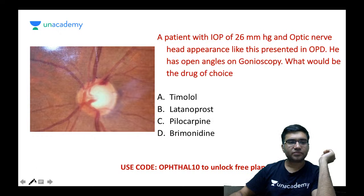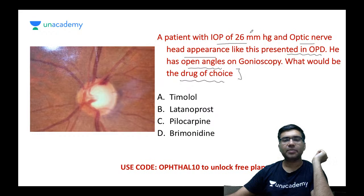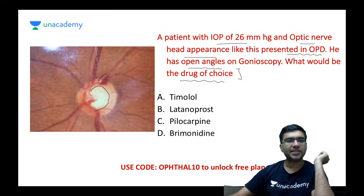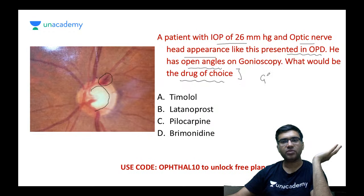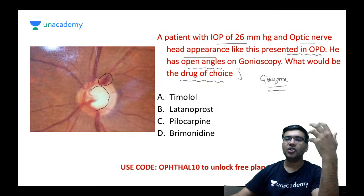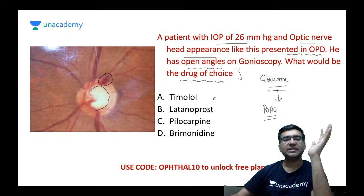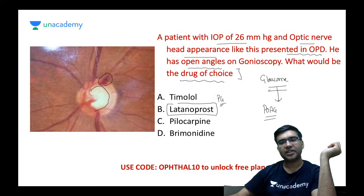A patient with intraocular pressure of 26 mmHg and an optic nerve head showing increased cup-disc ratio and disc hemorrhage is presented. Gonioscopy shows open angles. This patient is suffering from glaucoma — specifically primary open angle glaucoma (POAG) when angles are open on gonioscopy. The drug of choice in primary open angle glaucoma is PG analogues — specifically latanoprost.